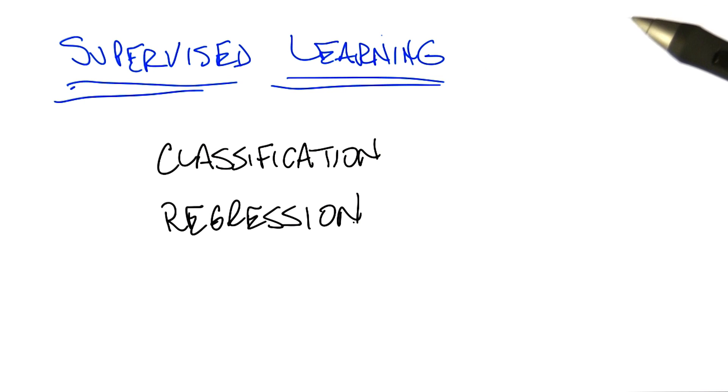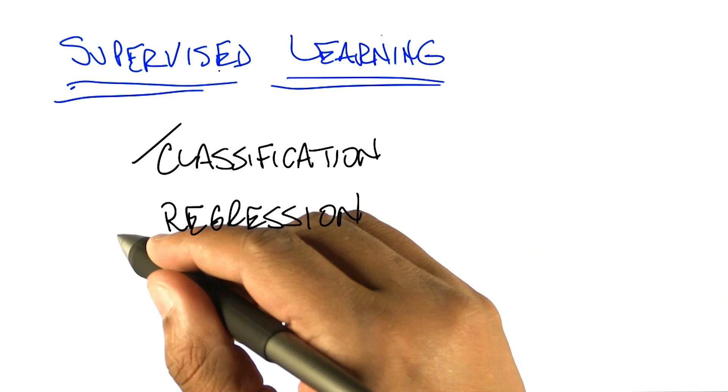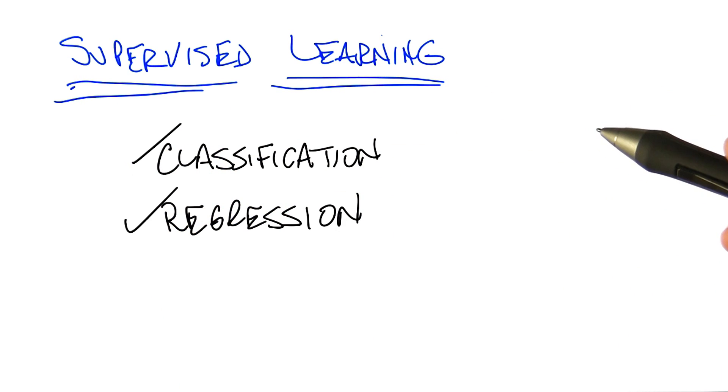Okay, so the two types of supervised learning that we typically think about are classification and regression. We're going to spend most of the time today talking about classification and more time next time talking about regression. So the difference between classification and regression is fairly simple for the purposes of this discussion.